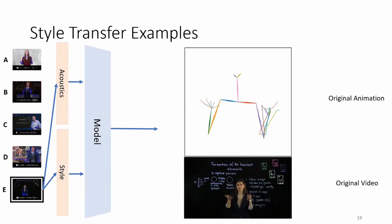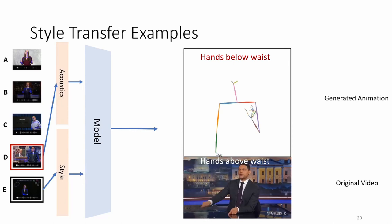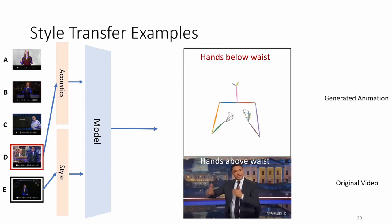Let's look at a few more examples of style transfer. First, we have a look at the original video where the style and audio is from speaker E, just to calibrate ourselves with the style of the speaker. Now, let's look at some generated animations with the style of the previous speaker and audio of a new speaker. The original video of the new speaker is played along for reference. Speaker D is seated, but the generated gestures have the hand below the waist like the style of speaker E.